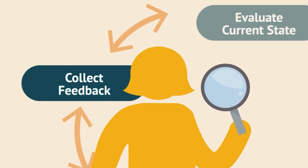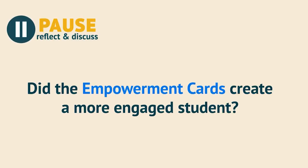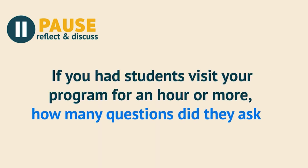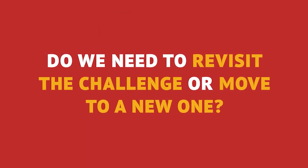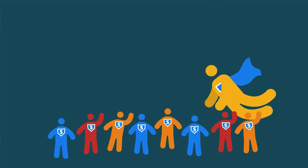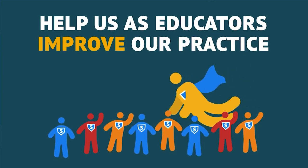Step 5: Measure the outcome. Did the empowerment cards create a more engaged student? If your goal was to increase interest in your program, did you see more hands raised with questions during a tour? If you had students visit your program for an hour or more, how many questions did they ask? The final step of the improvement process is to, again, assess the current state. Given what we learned from the implementation of the first cycle, do we need to revisit the challenge or move to a new one? Did we collect the data we needed to decide this? This process should not be onerous or time-consuming, but rather help us as educators improve our practice over time to benefit all of our students.